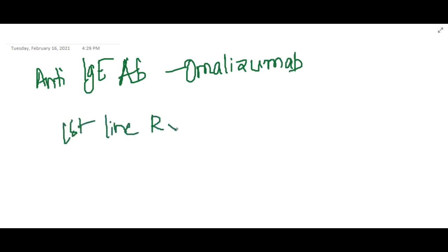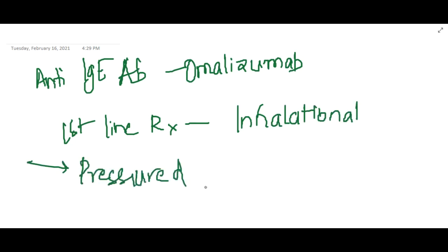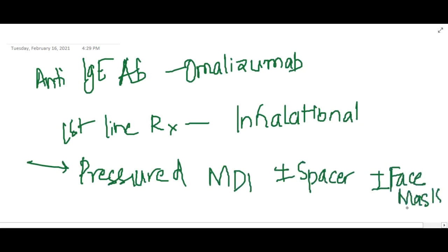If you see the first-line treatment of asthma, we can do inhalational therapy. In first-line treatment of asthma, we can use pressurized metered-dose inhaler, which can be given with plus or minus spacer can be added, or you can use face mask also.